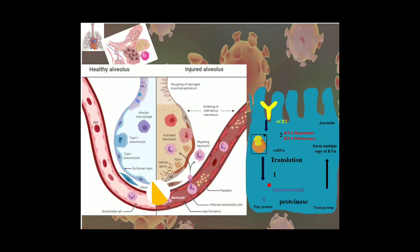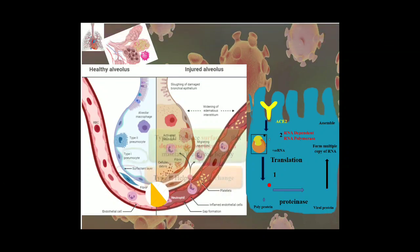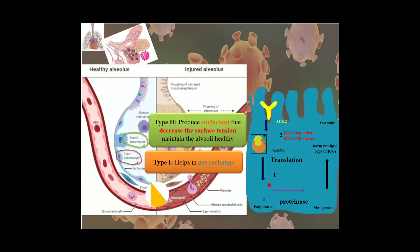What is the work of these pneumocytes? Type 1 helps in gas exchange, type 2 produces surfactant. What is the use of this surfactant? It decreases the surface tension so that our alveoli can be maintained healthy.